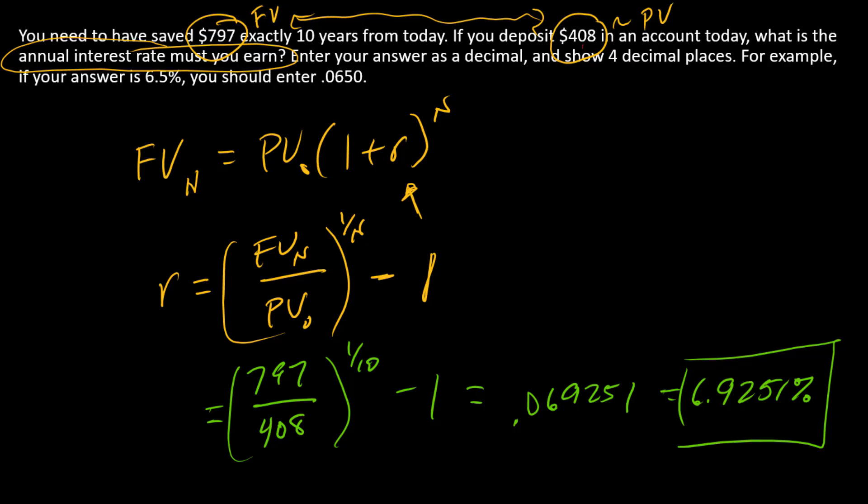So if you want to check this, it's pretty simple. You just need to take 408, plug it into PV; 797, plug it into FV; put 10 into N and put the discount rate into R, and just check to see that those sides are equal.